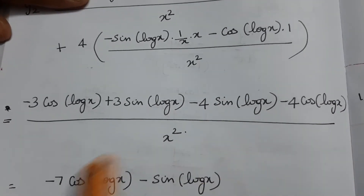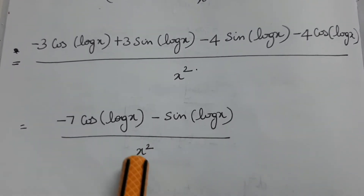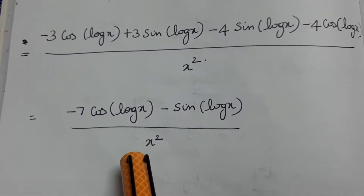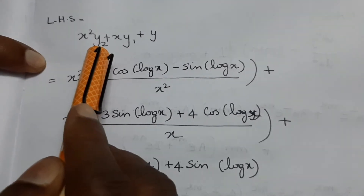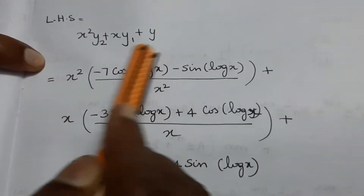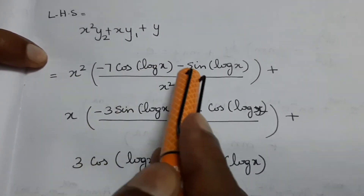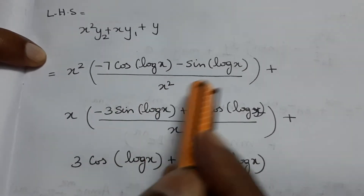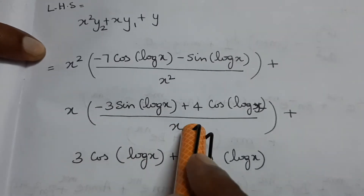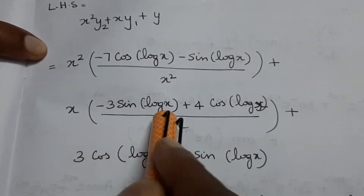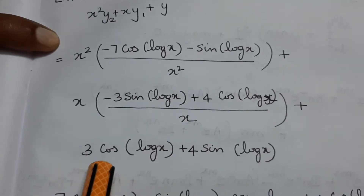This simplifies to y₂ equals minus 7 cos(log x) minus sin(log x) divided by x². Now substituting in the left-hand side: x² times y₂ plus x times y₁ plus y, where y₁ equals minus 3 sin(log x) plus 4 cos(log x) divided by x and y equals 3 cos(log x) plus 4 sin(log x).